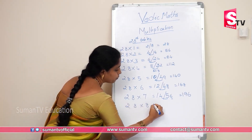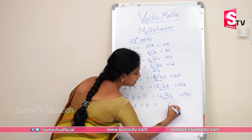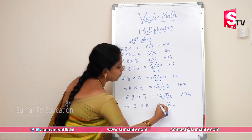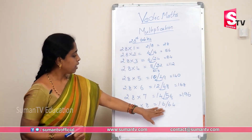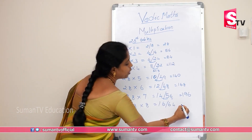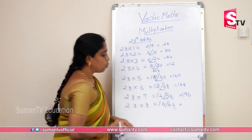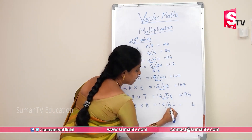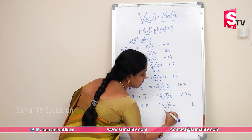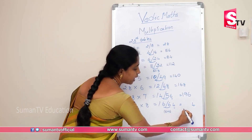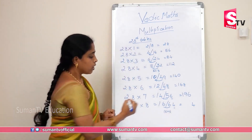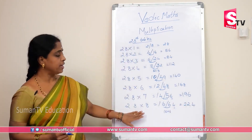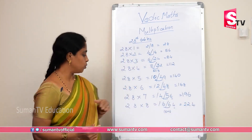28×8: 8×8 is 64. 8×2 is 16. Write 4 in unit place; 6 plus 6 — that is 16 plus 6 added gives 22. So 28×8 is 224.